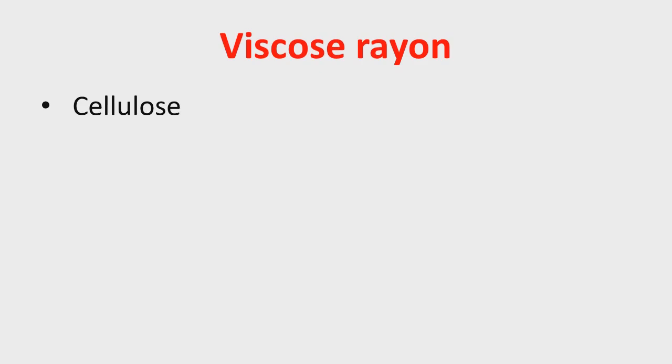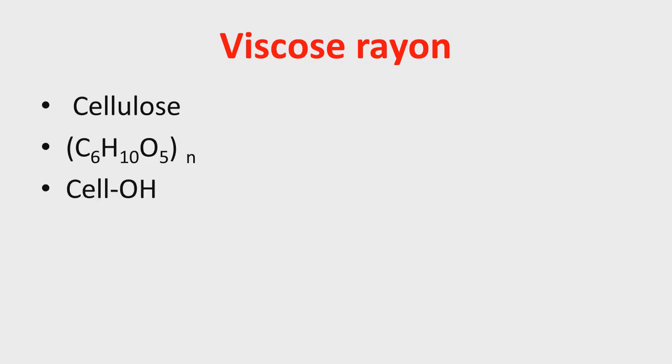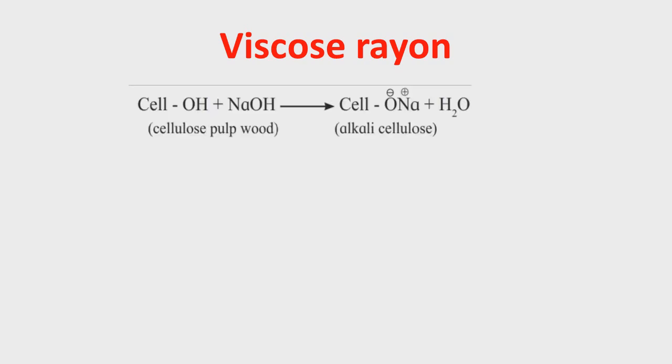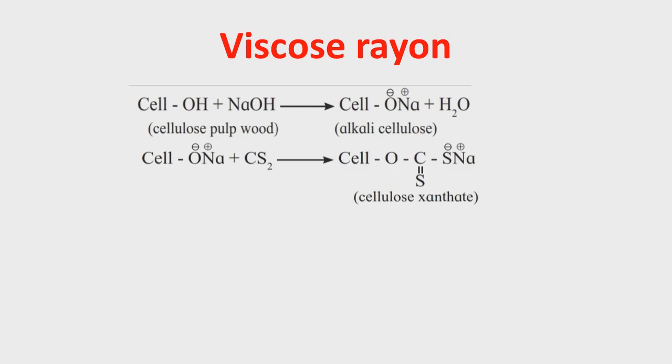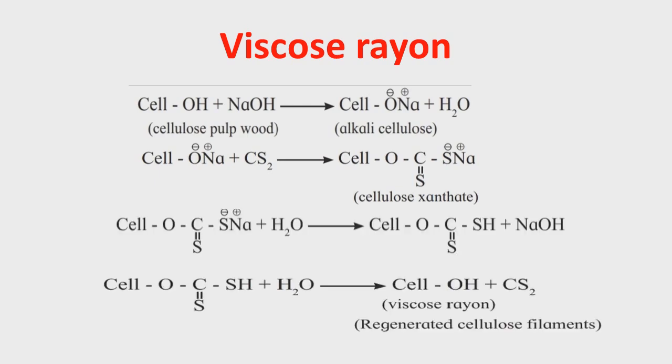Now we will look at semi-synthetic fiber known as viscose rayon, which is obtained from cellulose. Cellulose is a linear polymer of glucose units with molecular formula C6H10O5, and its modified formula is cell-OH, which is used for the formation of viscose rayon. For its formation, cellulose is taken in the form of wood pulp and treated with NaOH, forming alkali cellulose with removal of water. This alkali cellulose on treatment with carbon disulfide forms cellulose xanthate, which on hydrolysis gives viscose rayon.